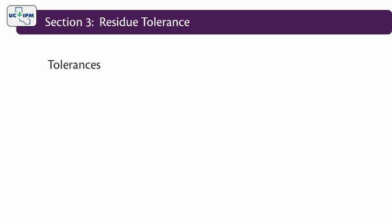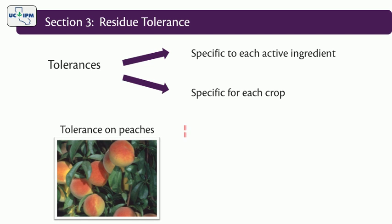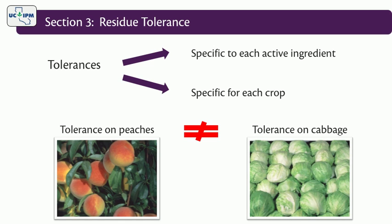Tolerances are specific to each active ingredient used on a specific crop, so the tolerance for an active ingredient on peaches could be very different than the tolerance for that same active ingredient on cabbage or another commodity.